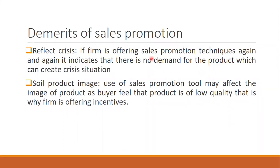Next, the disadvantages of sales promotion. The first is that it reflects crisis — if a firm is offering sales promotion techniques again and again, sometimes it signals there is no demand for the product. For example, lion dates and lion honey — 24/7, 365 days they have a one-plus-one offer. Similarly products like Nirma soap always come in packages of three to five. If you do too much sales promotion, people will think the company is in a crisis situation.